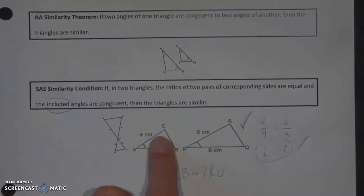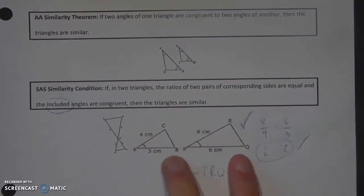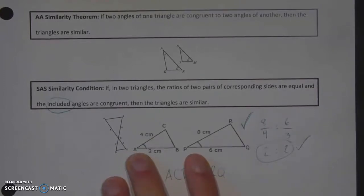Please watch, though. If this angle had been at C or R instead of A and P, it would not have worked. Same thing with B and Q. It has to be the angle between the two proportional sides in order to prove similarity.